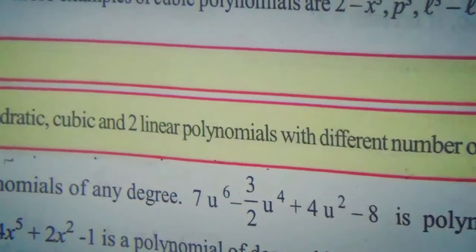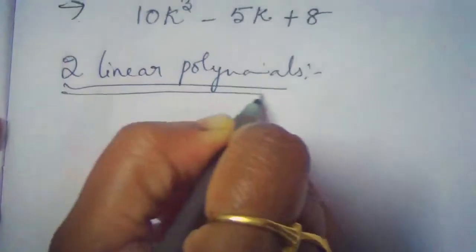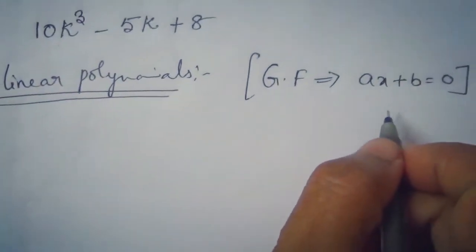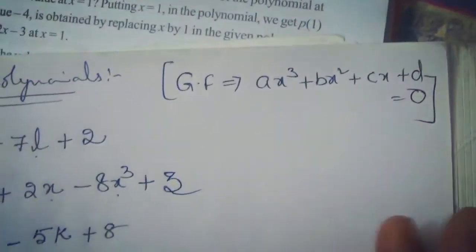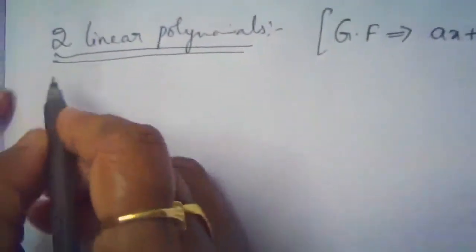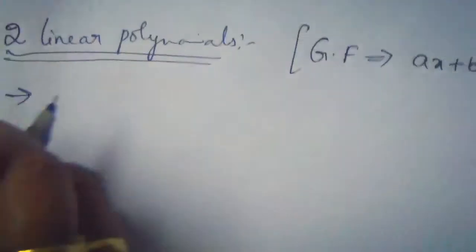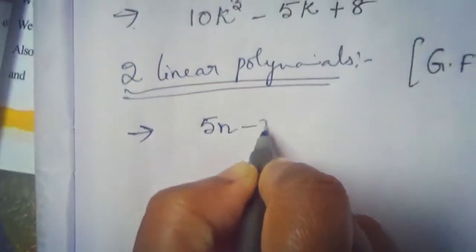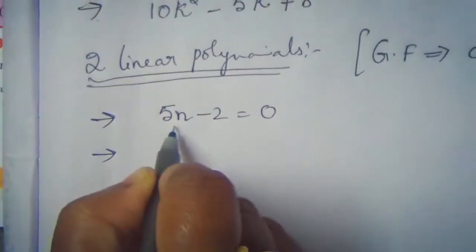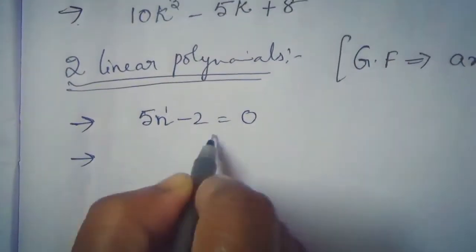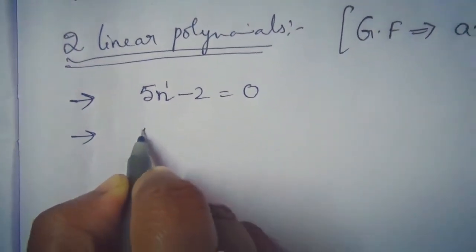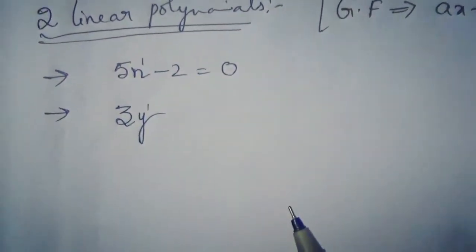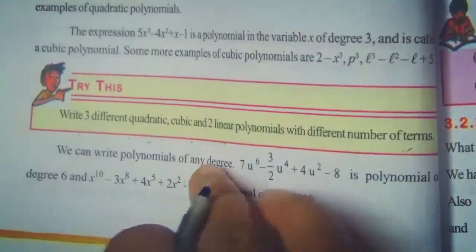For linear polynomials, the highest power must be 1. The general form is ax + b = 0, where a ≠ 0. Two examples: 5n − 2 = 0, where the variable is n with highest power 1, and 3y, where the variable is y with highest power 1. With this we finish the 'Try This' on page 48.